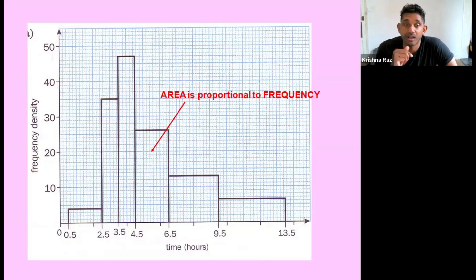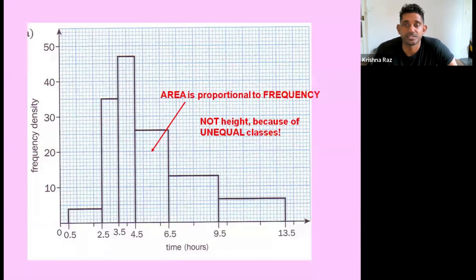And the reason for that is the area of a bar is what tells us the frequency. So if you think about a bar chart, it's the height of the bar which will tell you which bar is more common. Here it's the area. And because of that, the height does not tell us the frequency.